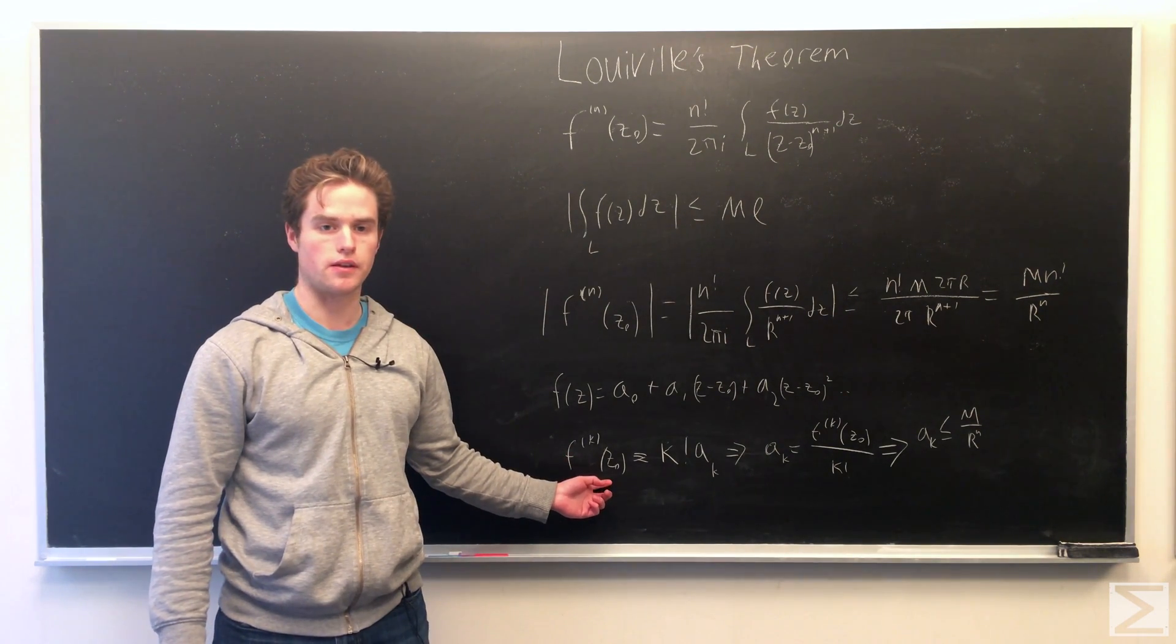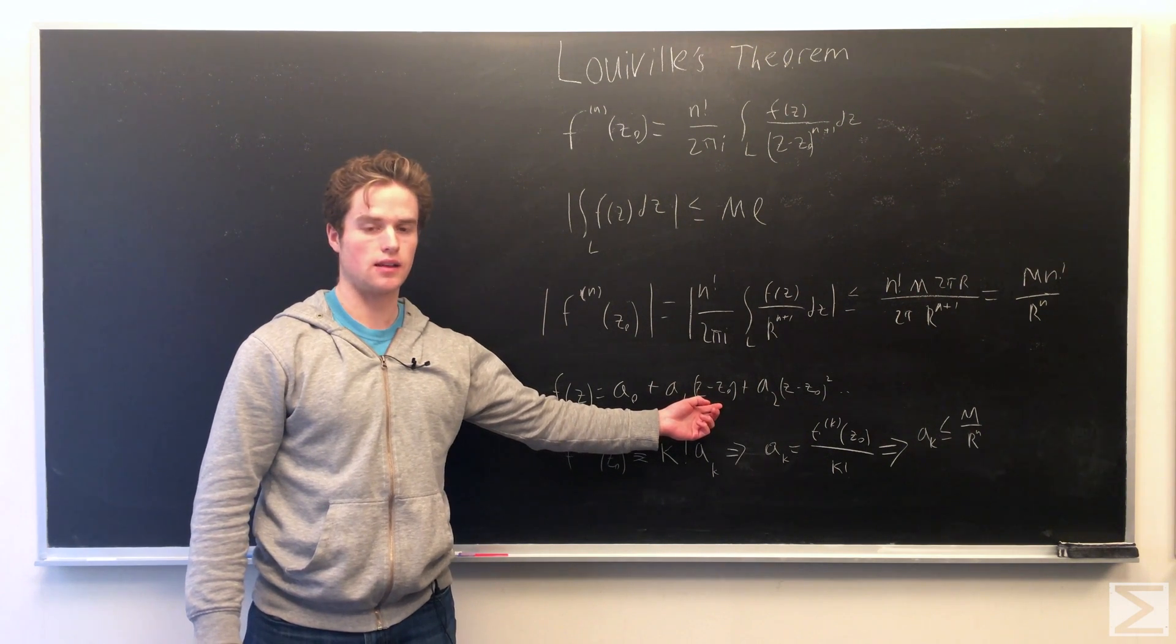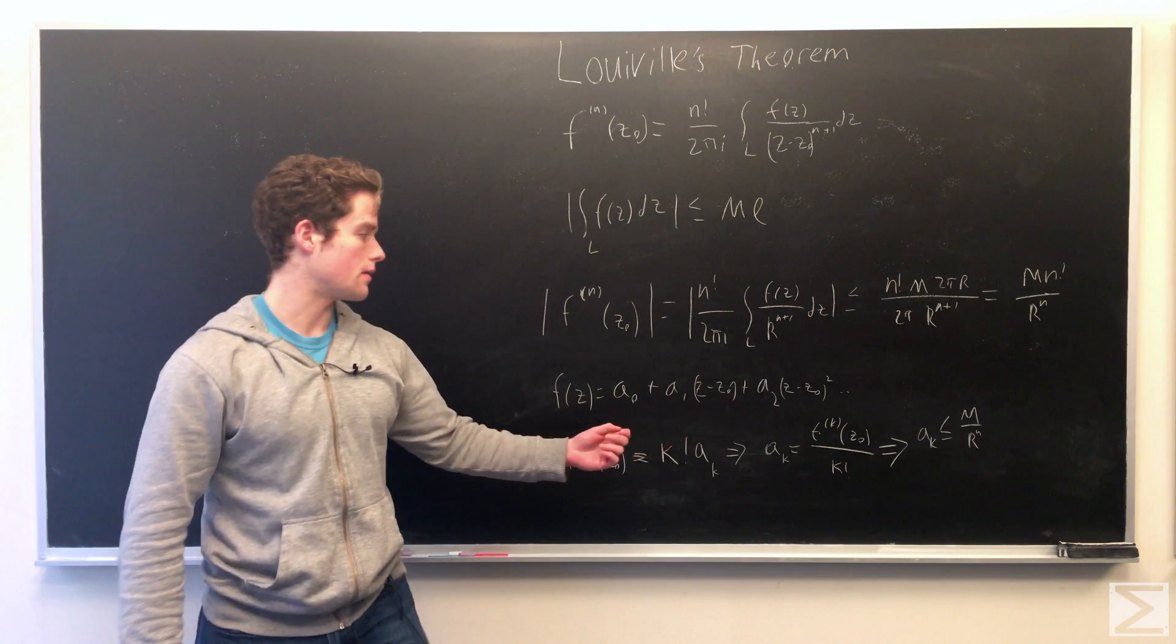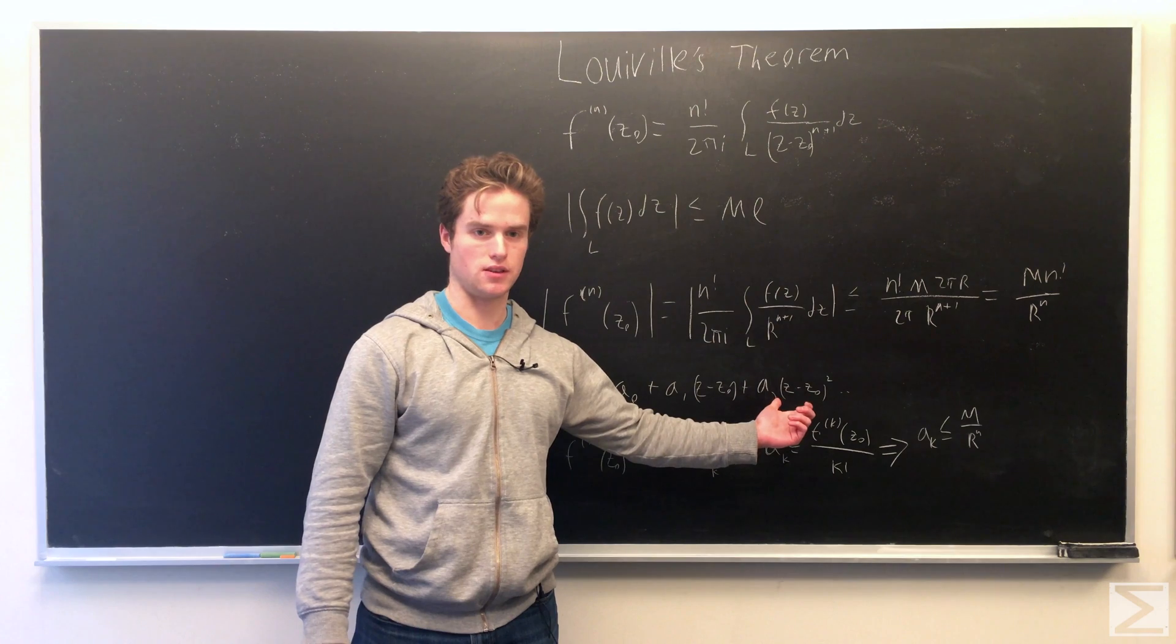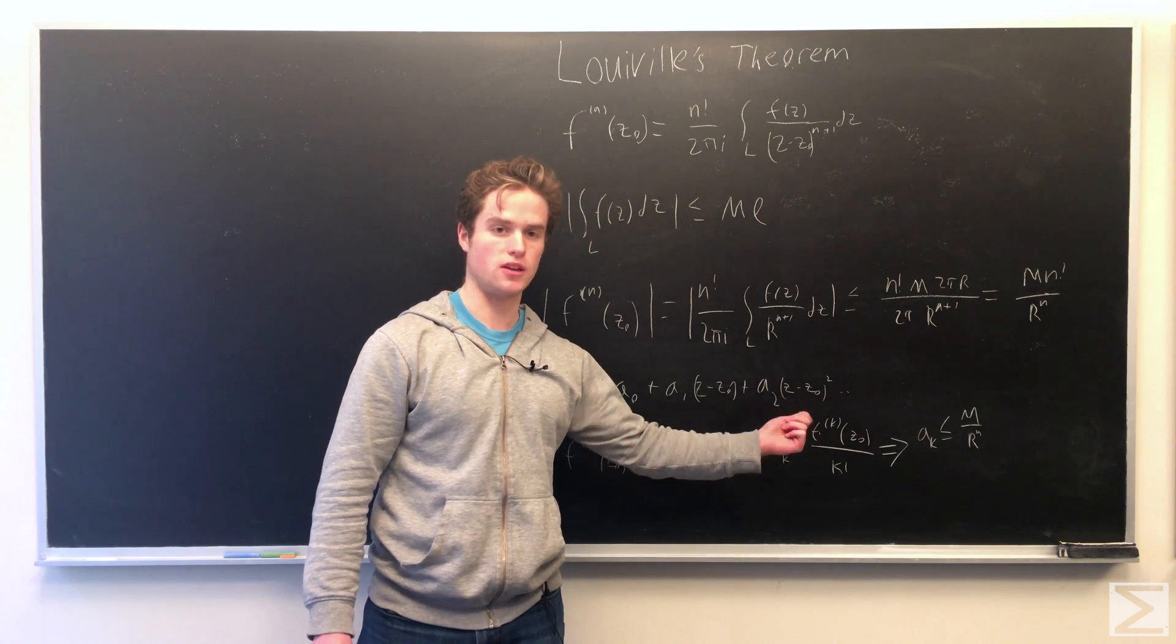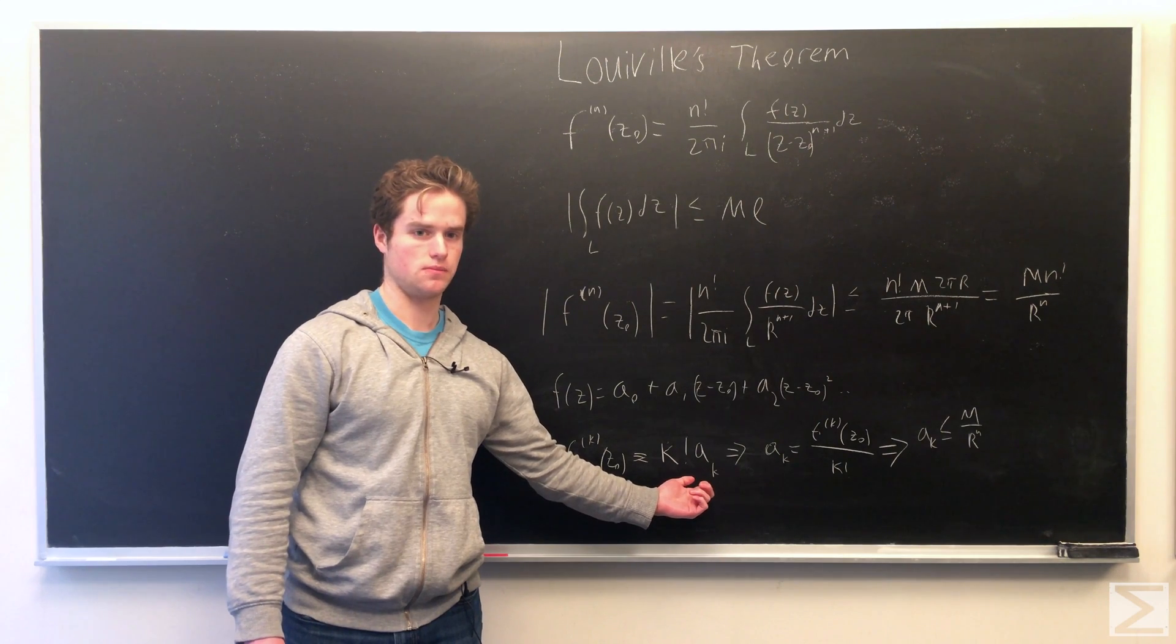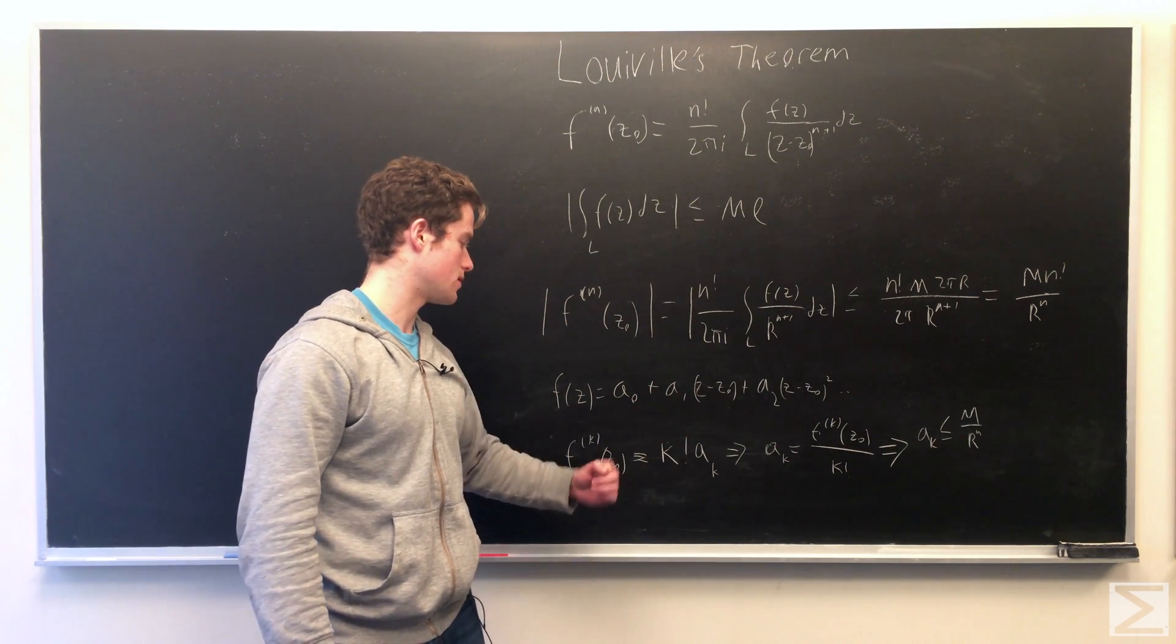So if we take the k-th derivative, we know every power of (z - z₀) less than k, those go to 0. Any power of (z - z₀) greater than k will still have a power of (z - z₀) after the k-th derivative. So if we plug in z naught, those go to 0. So we're only left with k factorial times aₖ, which will be the one term without any powers of (z - z₀).